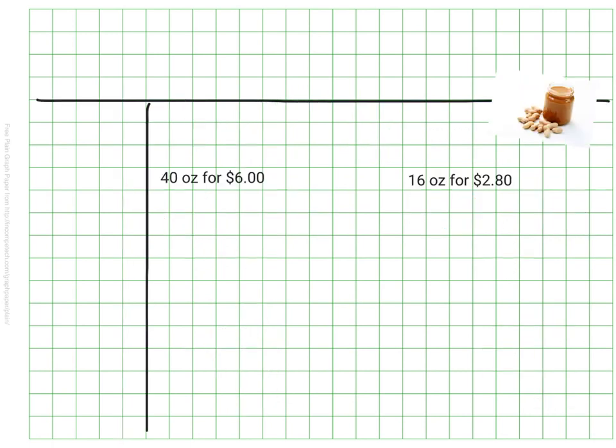We can do the same thing if we want to compare prices to figure out what's the better deal or what's the cheaper price. I use this one all the time in my daily life because I want to make sure I'm getting a good deal. For example, trying to buy peanut butter, we can see that 40 ounces of peanut butter would cost six dollars and 16 ounces of peanut butter costs two dollars and 80 cents.